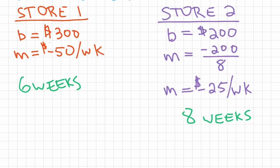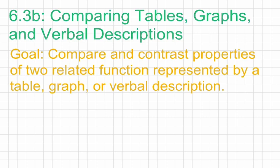This is not a problem where we ask which store has a better deal — it comes down to personal preference and how much money you can afford per week. Store 1: $50 back per week, paid off in 6 weeks. Store 2: $25 per week, paid off in 8 weeks. That finishes Lesson 6.3b — hopefully you can now compare and contrast properties of two related functions represented by tables, graphs, or verbal descriptions. If you have any questions, please write them down and we can go over them together.